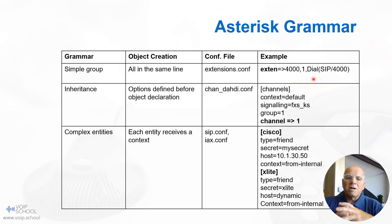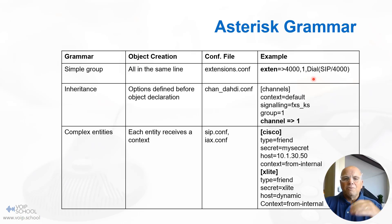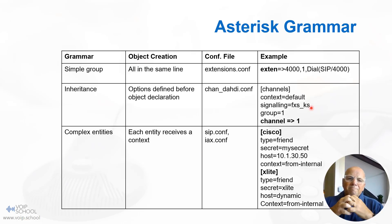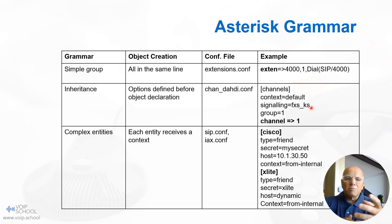Inheritance allows options to be defined before the object declaration. It is used in the chan_dahdi.conf file. You start by setting all the variables, and then at the end you declare the object. Finally, complex entities involve each entity receiving a context, as demonstrated in the sip.conf and iax.conf files.